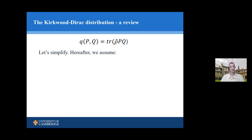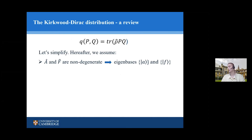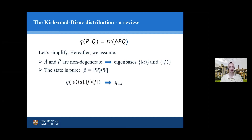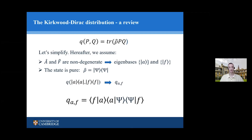To simplify things, we're going to make a couple of assumptions — not strictly necessary, but they make things easier and we can generalize at the end. We're going to assume that A and F are non-degenerate, so they have a unique eigenbasis. We're also going to assume the state is pure, and just call the state ψ. To clean up notation, we write Q subscript AF to denote the quasi-probability assigned to the joint outcome labeled by a and f. With those changes, this is the definition we'll be working with.